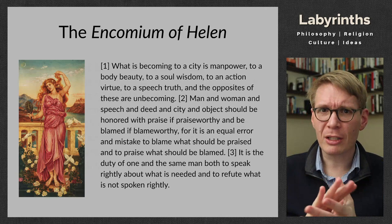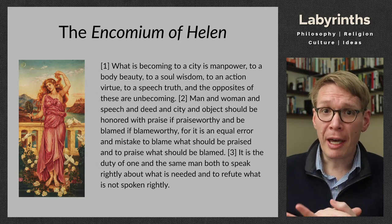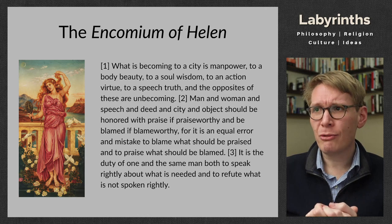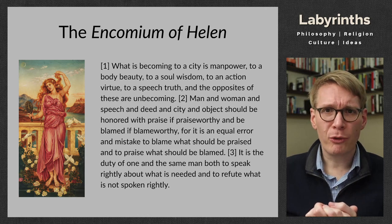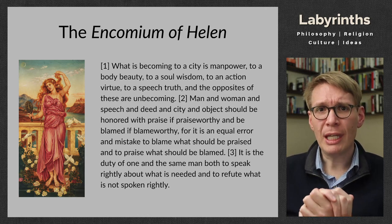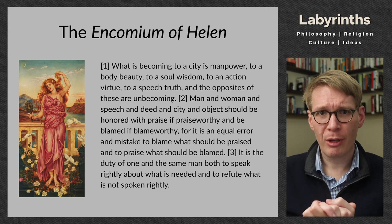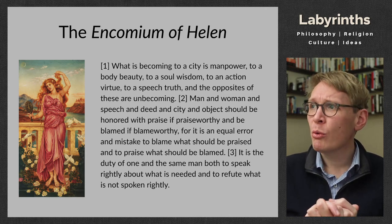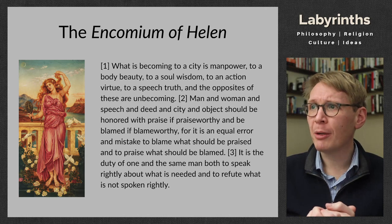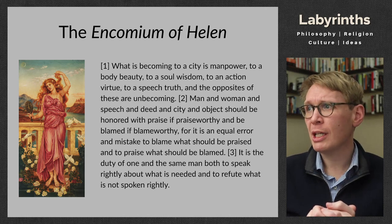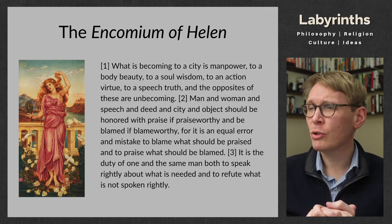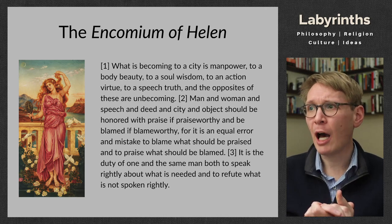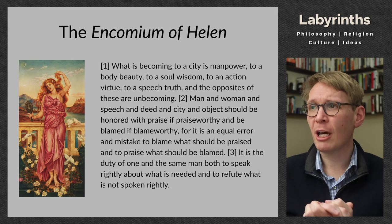In his text, the Encomium of Helen, Gorgias shows all three modes of rhetorical appeal — ethos, pathos, and logos — and it also gives us a good example of the use of argument in the context of a speech. What we're going to do here is just look at a few passages from this to introduce the text. He starts out at the very beginning of the speech — it's only about a page and a half, not a long text — by making three statements that I propose establish his ethos as a speaker. Statement one, the first sentence: 'What is becoming to a city is manpower, to a body beauty, to a soul wisdom, to an action virtue, to a speech truth, and the opposites of these are unbecoming.' 'Becoming' here means suited to or appropriate for — what is best for a body is that it should be beautiful, what is best for a soul is that it should exhibit wisdom, and so forth. Once you understand what it's saying, it's the kind of thing people would say, 'yes, I agree with that.'